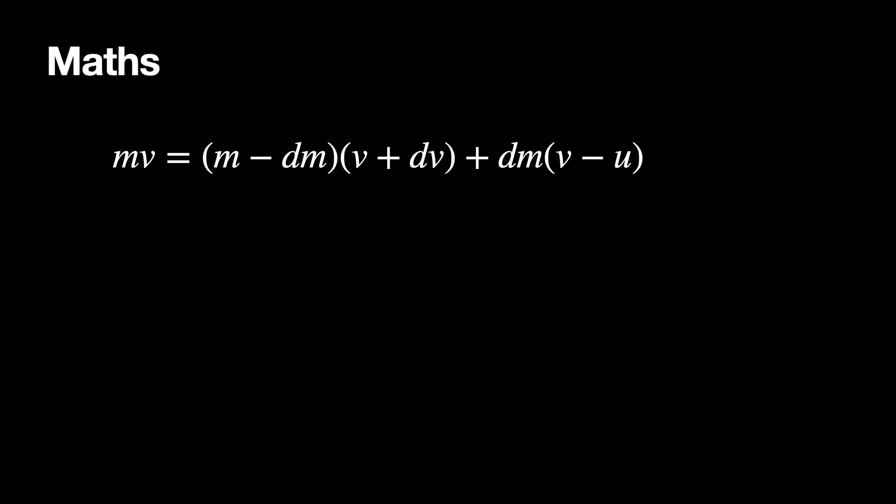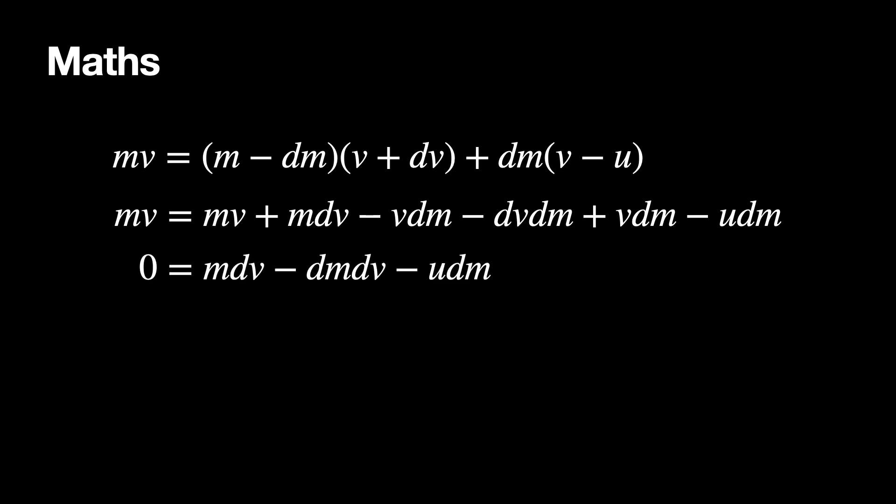Okay, so let's do the math. So here is that same equation. All I'm going to do is multiply out the two parentheses so that I don't have any parentheses anymore. So I get that first term, I get four pieces: mv, mdv, vdm, dvdm. And then the last terms, I get vdm and minus udm. Now some stuff cancels right away. You can see the mv's are on both sides and those cancel. And then I get zero equals mdv minus dmdv minus udm. And so if I solve for dmdv, I just added dmdv to both sides.